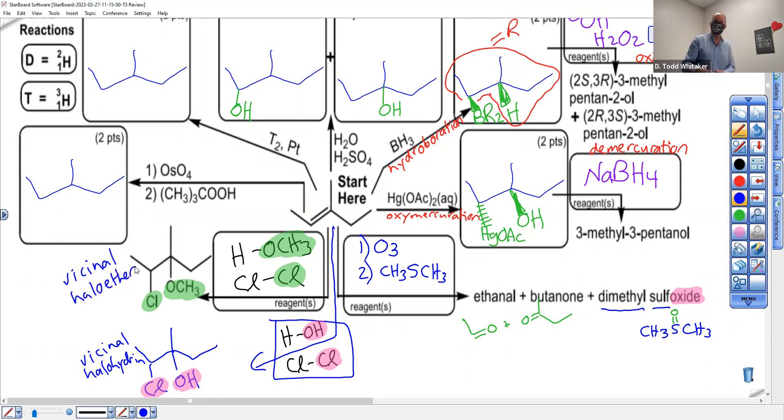So instead of a vicinal halo hydrin, we got a vicinal halo ether. In fact, this was a clue on another exam. It said, hint, vicinal halo ether. Why did I give that hint this time? Because I drew the halo ether. You had to predict the vicinal halo ether on that test. That was a box. And this was given. That's very common.